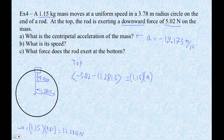With three sig figs, we'd say minus 14.2. Actually, for centripetal acceleration you'd give a positive number, because what would a negative centripetal acceleration mean? So that would be the answer to part A.